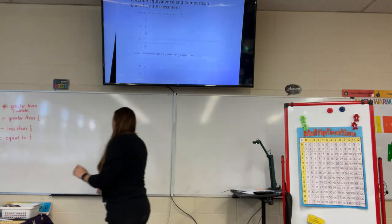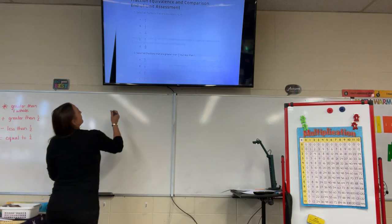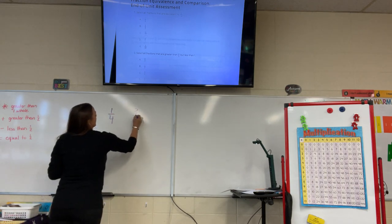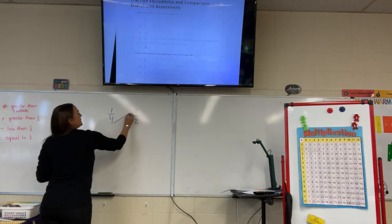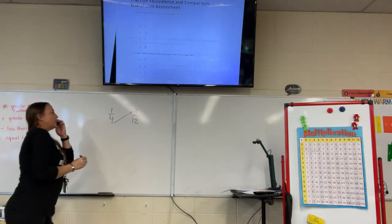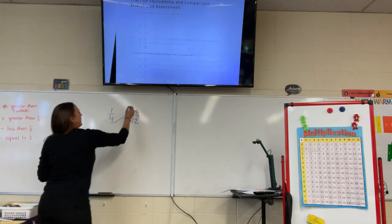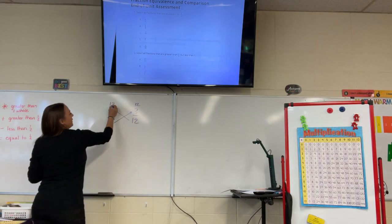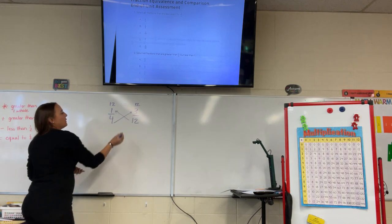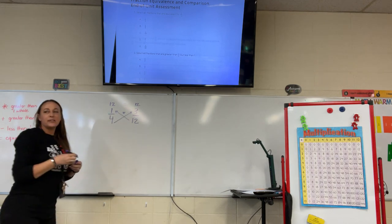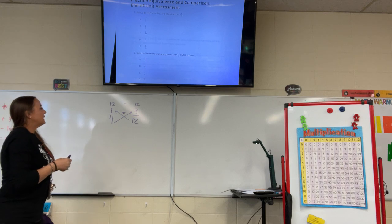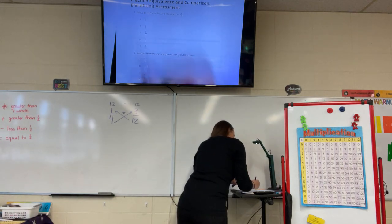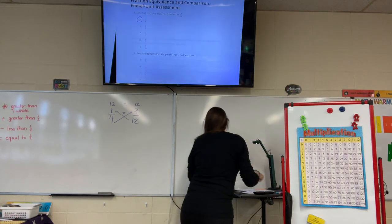To start with, we have the fraction 1/4, and we need to cross multiply that with 3/12. What is 4 times 3? 12. And 1 times 12? 12. Since 12 equals 12, that tells you 1/4 is equivalent to 3/12. So we're going to circle 1/4 because that one is equivalent.